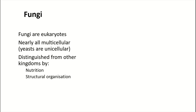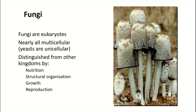Looking at structural organization and physical appearance, there are three categories of fungi: mushrooms, molds, and yeast. Fungi have growth and reproduction — both asexual and sexual reproduction. Some fungi are called imperfect fungi.